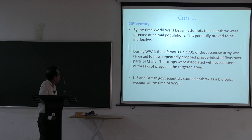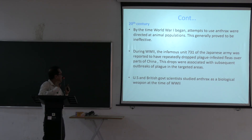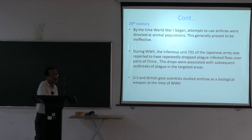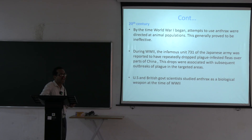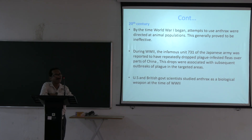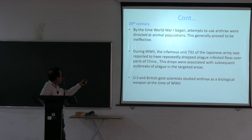During World War II, Unit 731 of the Japanese army reportedly dropped plague-infested fleas over China. The causative organism for plague is Yersinia pestis. Anthrax is caused by Bacillus anthracis.